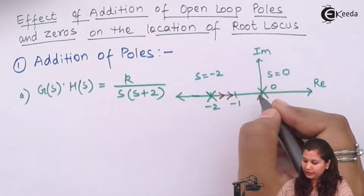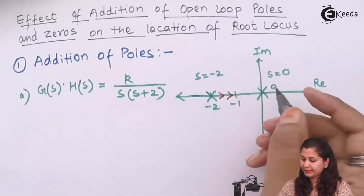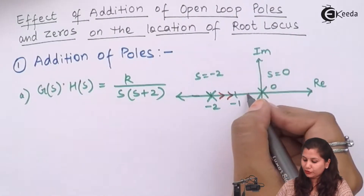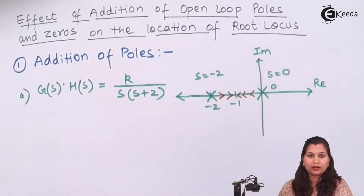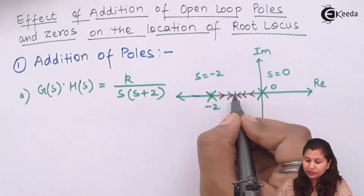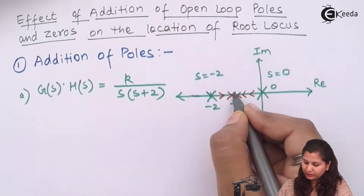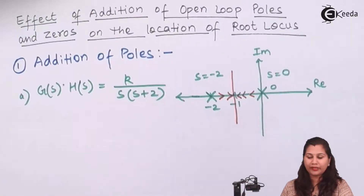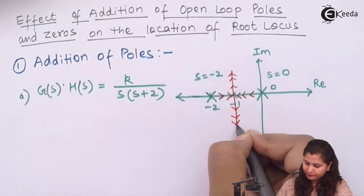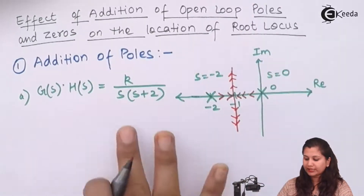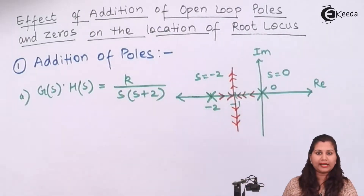Now for this pole, if we take a point here, then the number of poles on the right hand side is 1, which is odd. So the direction of root locus will be towards infinity in this direction. Due to this pole the direction of root locus is this, and due to this pole the direction will be this. So at some point the two root locus branches will meet and then diverge. So the root locus will be like this for the transfer function K upon s(s+2).